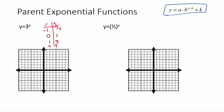Now to graph this, we'll plot the point negative 1, 1 third first — that's right down here. Then we've got 0, 1. I like to call this the locator point — whatever makes this exponent equal to 0 is always a good starting point when graphing these. Next we've got the point 1, 3. And then the point 2, 9, which is up higher. You can kind of see where this graph is going — it's going to extend out in a curve like this.